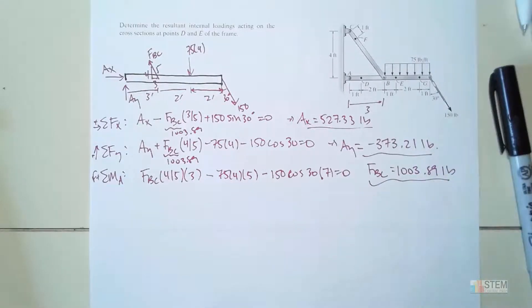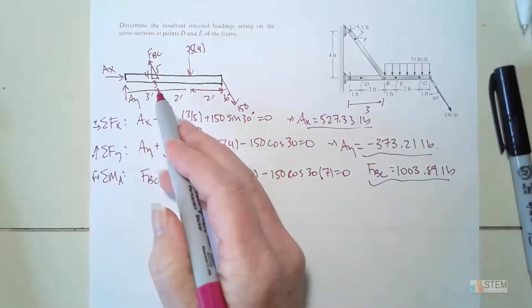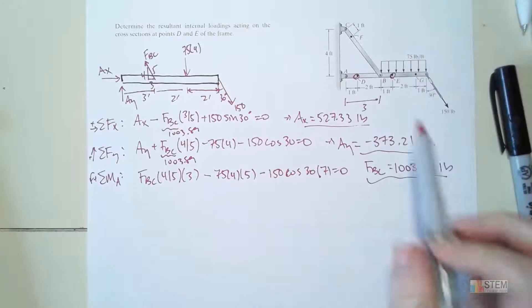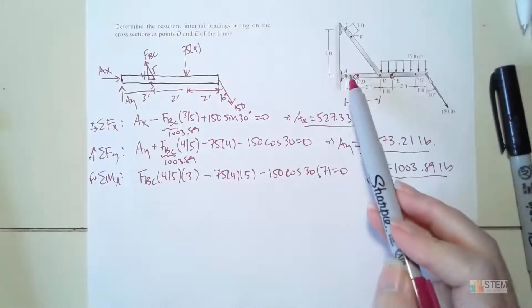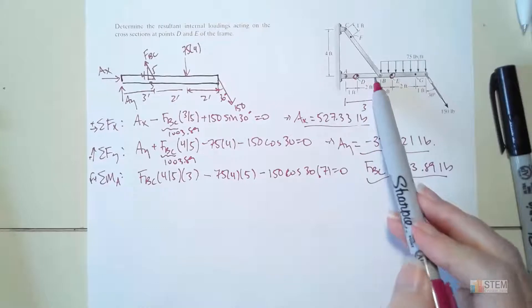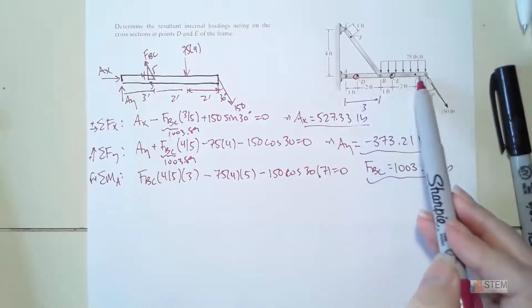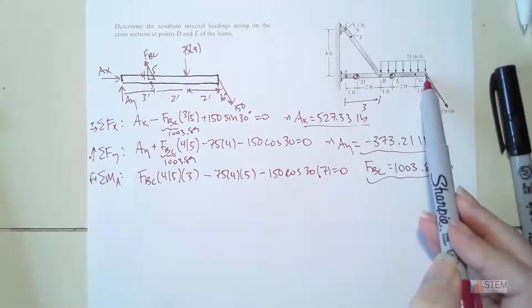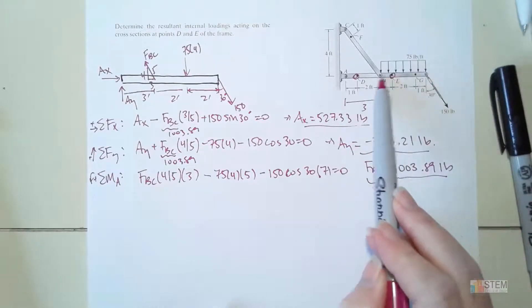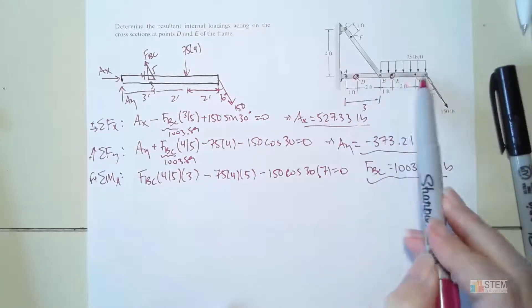We want the internal loadings at D and E. When finding internal loadings, you have the choice of using either side of the cut. For D, I could use the left section or go from D all the way to the end of the beam. For E, I can use the whole left section or the right section.